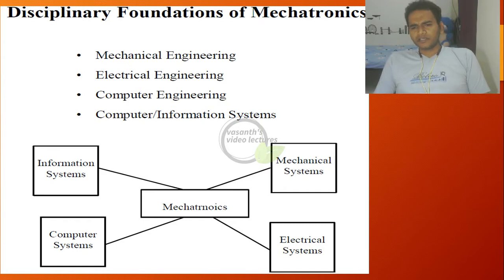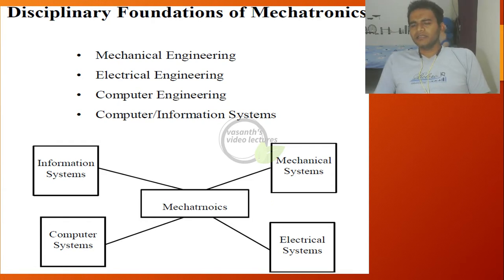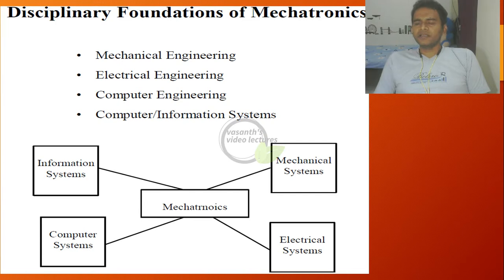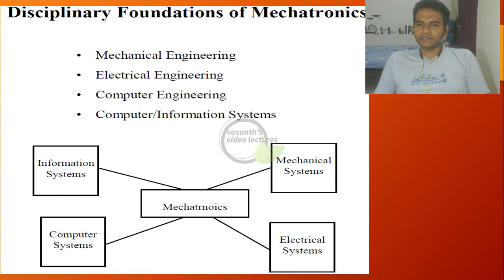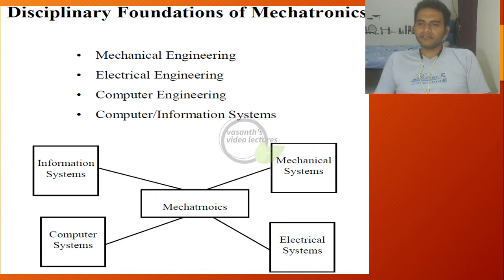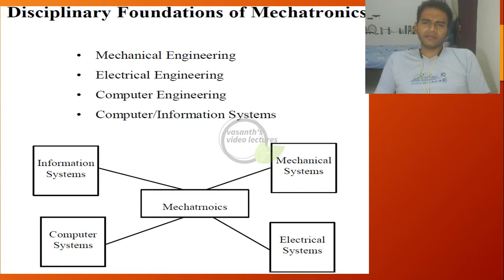All these disciplines work together to give a solution. The best example is an automated car. For designing an automated car you require the mechanical engineering guy, and for the control part there is a requirement of control electronics and control systems, especially for the safety part. Programming concepts are done by a computer engineering guy, and information transfer between systems — engine, braking, steering, and safety — all together gives a perfect solution. Mechatronics systems fundamentally require experts from all these backgrounds.